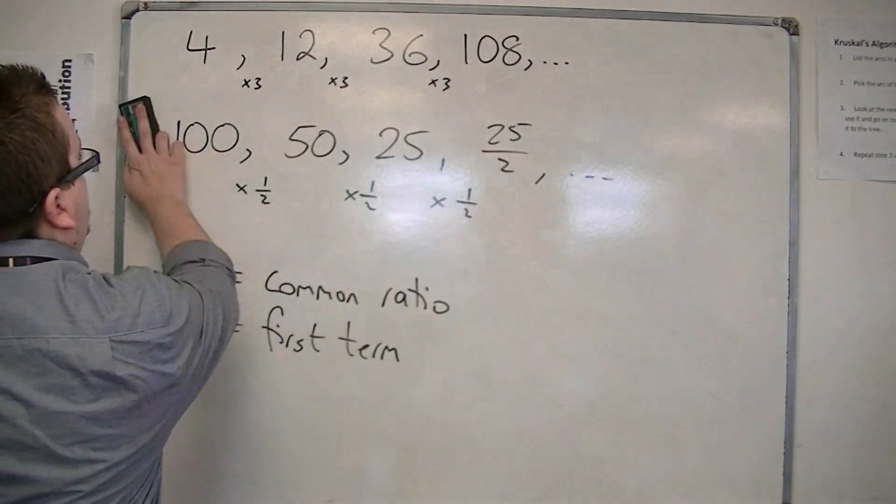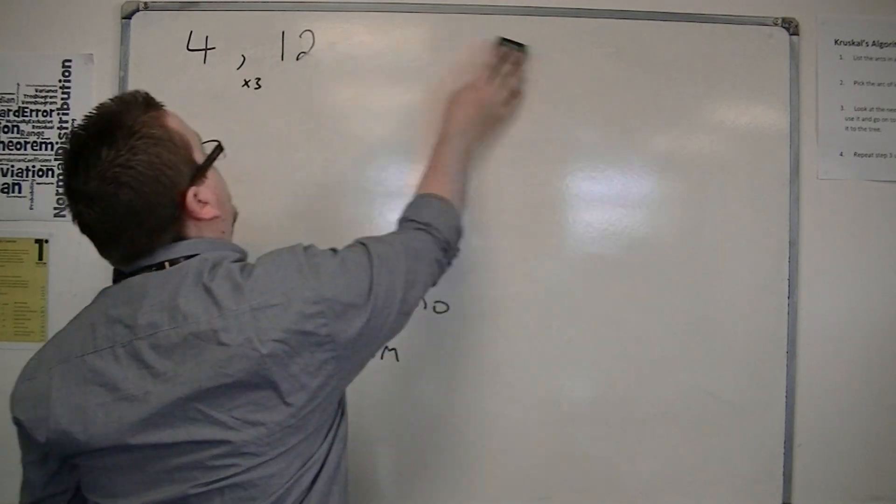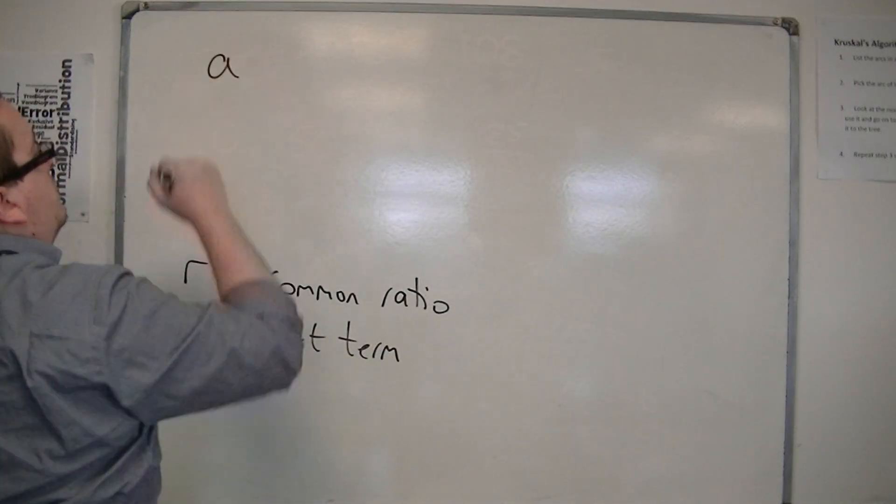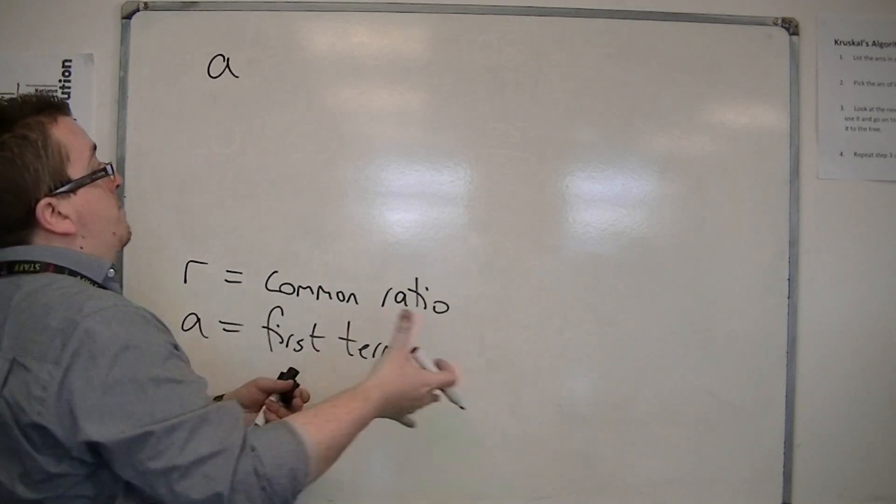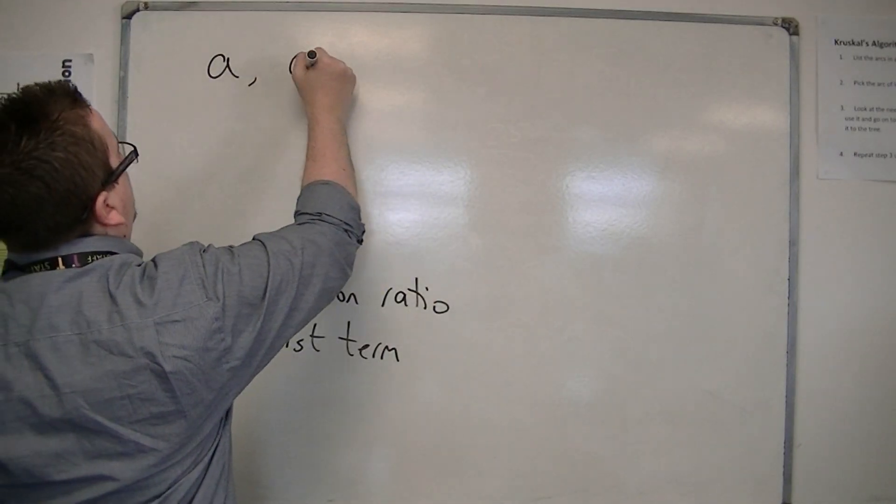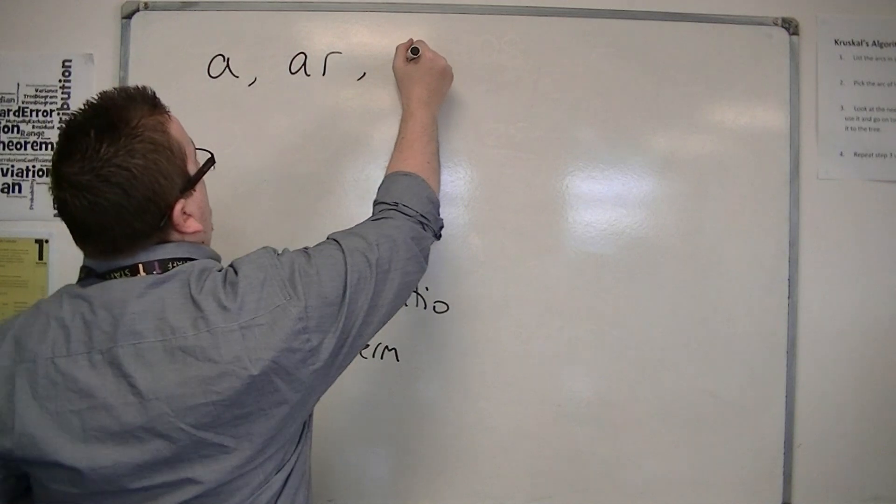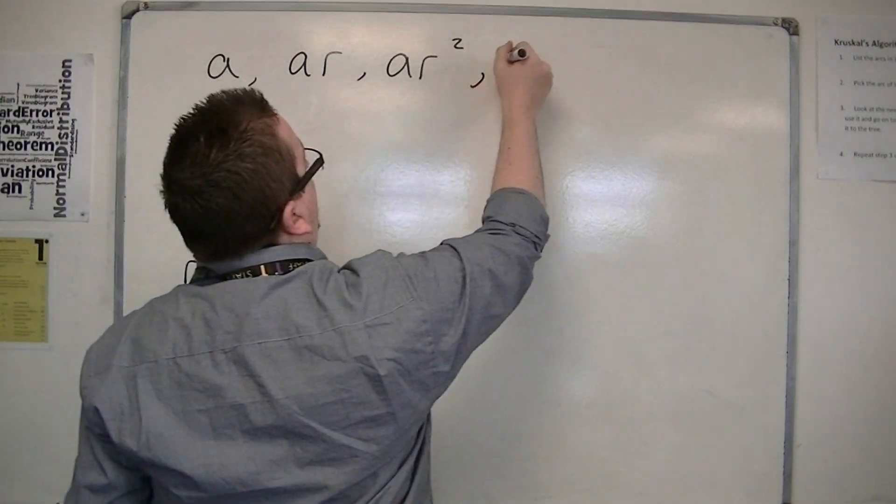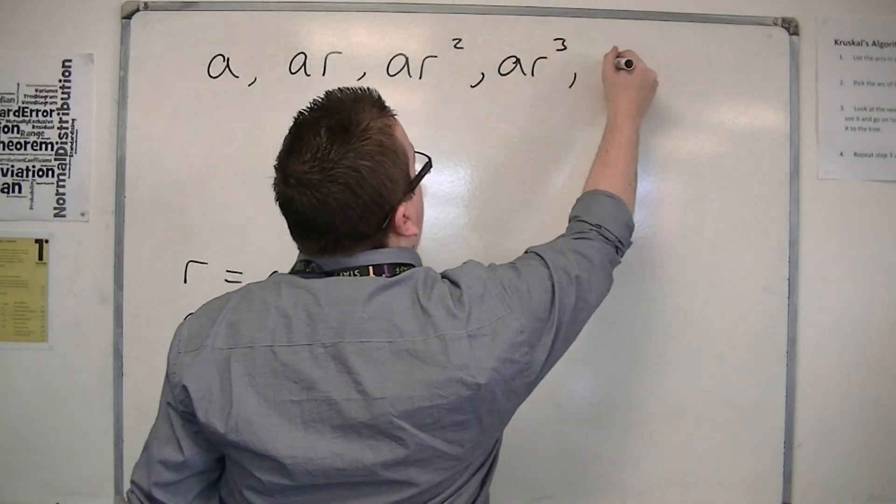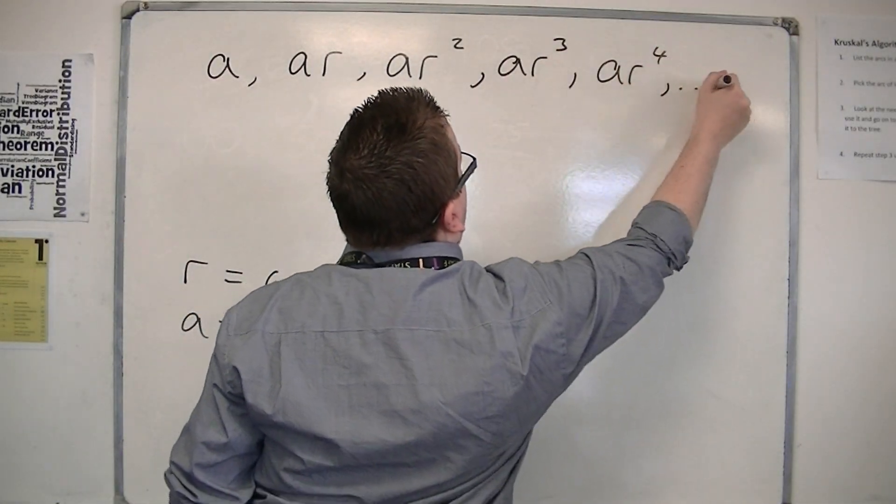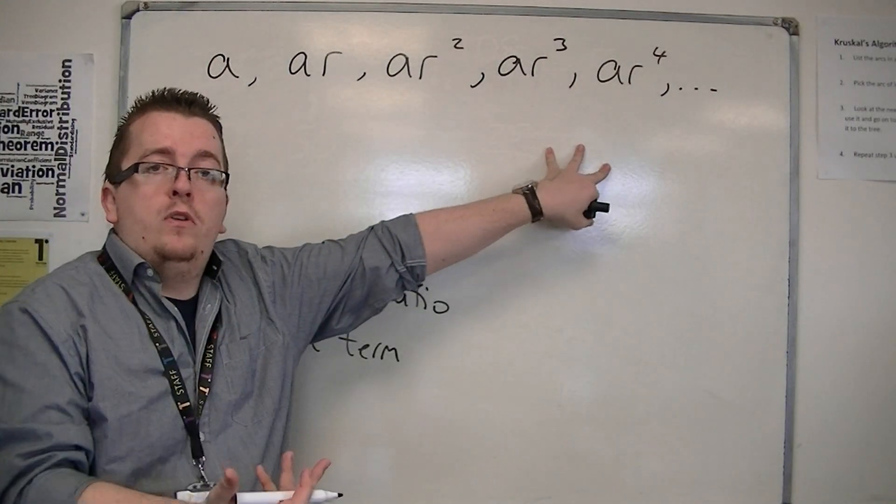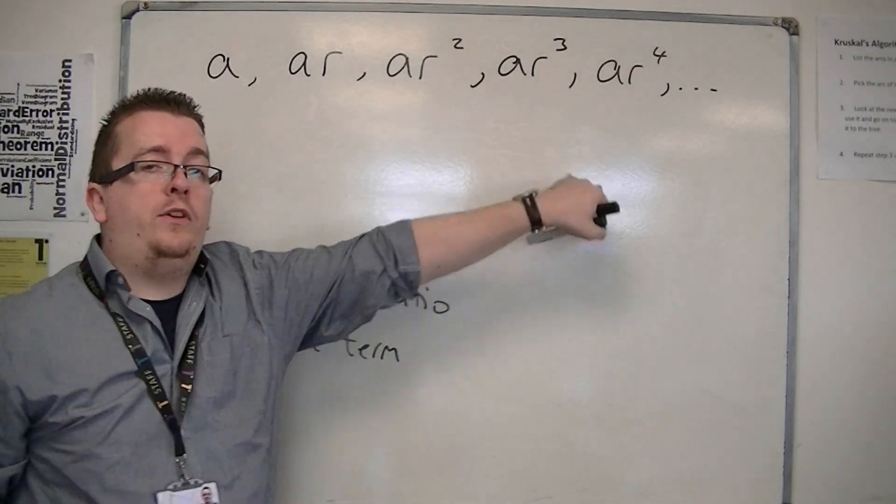So in general, if we start off with a, and then our next term would multiply a by r, and then the next term will be ar squared because I'm multiplying that previous term by r, then I'm multiplying by r again, so ar cubed, and then ar to the 4, and so on. And this is the most generalized I can write down of a geometric sequence.